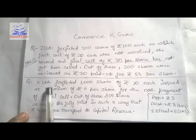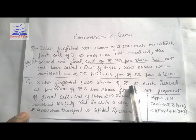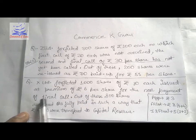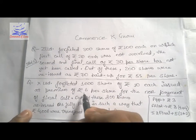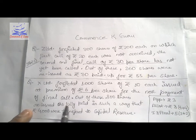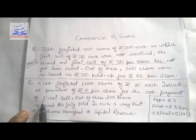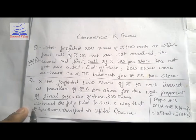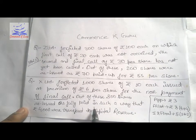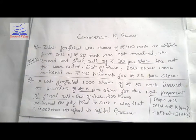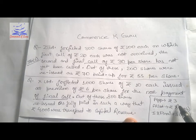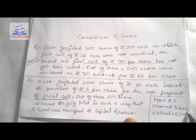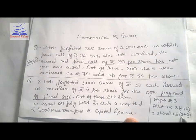The second question: X Limited forfeited 1,000 shares of ₹10 each issued at a premium of ₹6 per share, for non-payment of the final call. Out of these, 800 shares were reissued as fully paid such that ₹4,000 was transferred to capital reserve. The call structure is: application ₹3, allotment ₹8 (₹4 capital + ₹4 premium), first and final call ₹5 (₹3 capital + ₹2 premium).